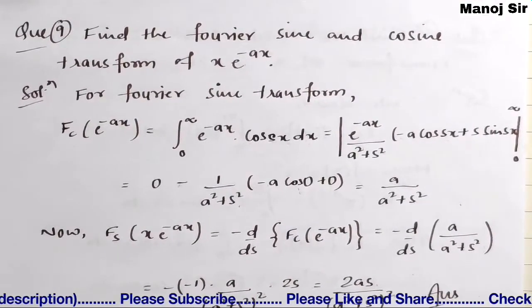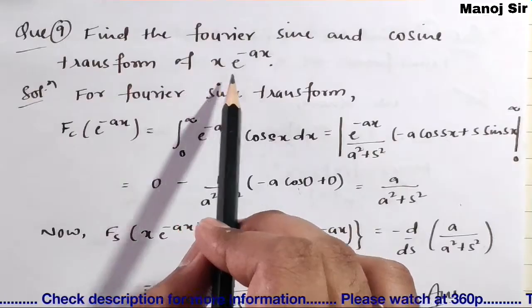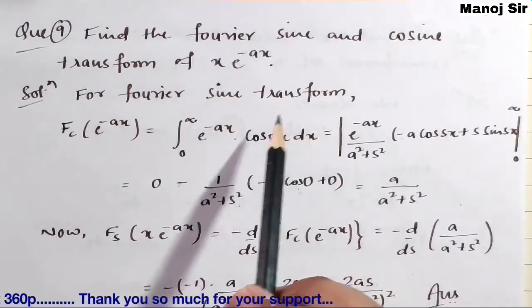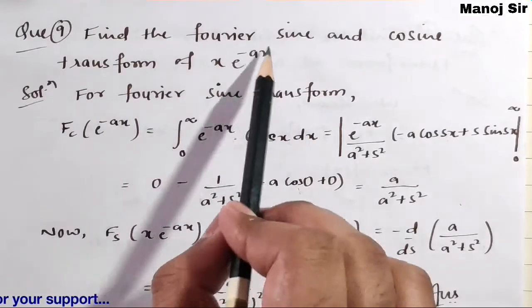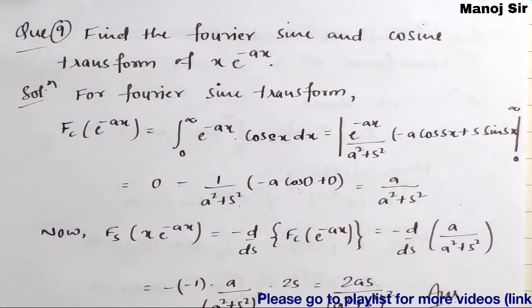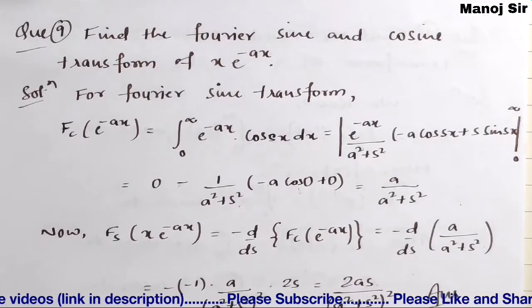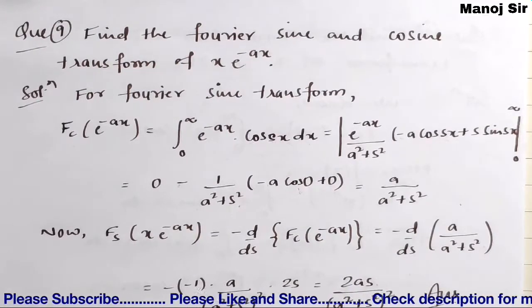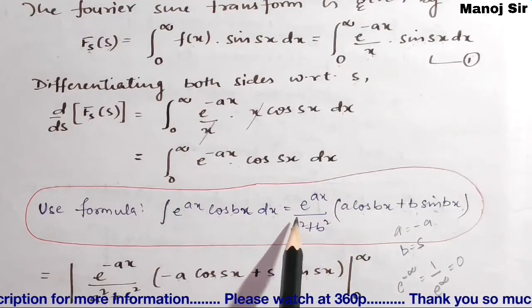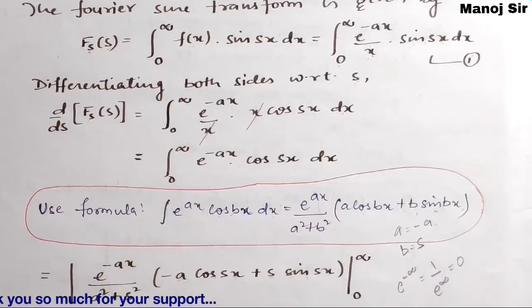In this problem, to find the Fourier sine transform of x·e^(-ax), we first need to find the Fourier cosine transform of e^(-ax), which equals the integral from 0 to infinity of e^(-ax)·cos(sx) dx. The formula we need is: integral of e^(ax)·cos(bx) dx = e^(ax)/(a²+b²) times [a·cos(bx) + b·sin(bx)].